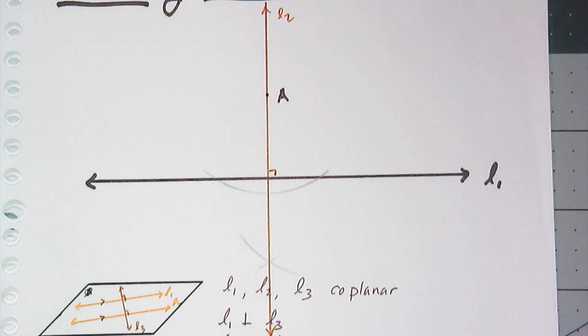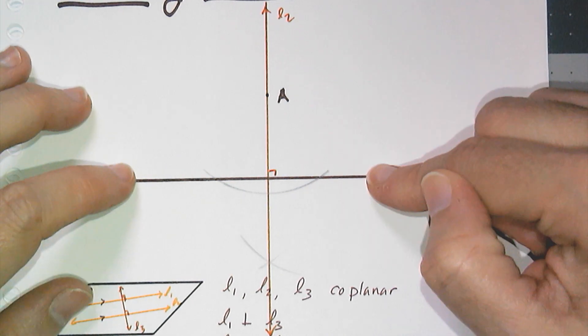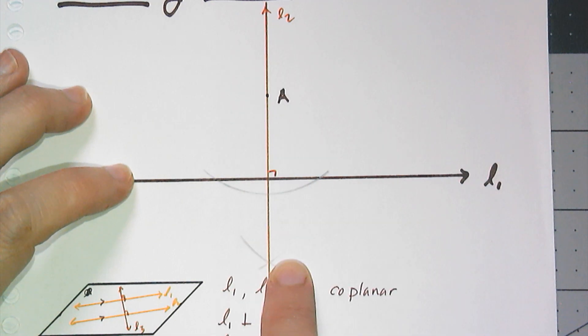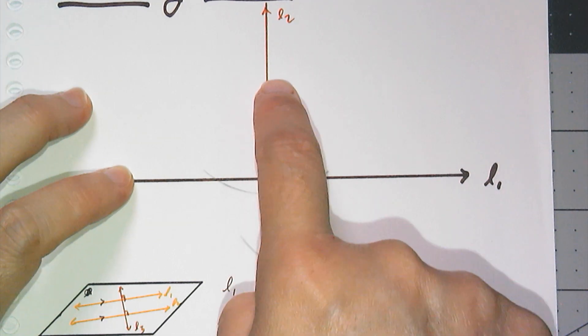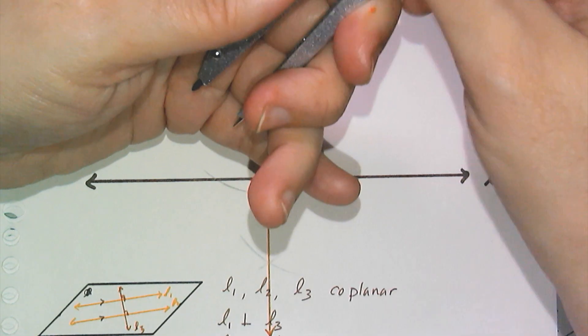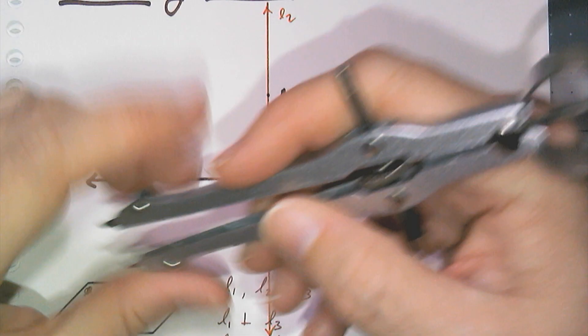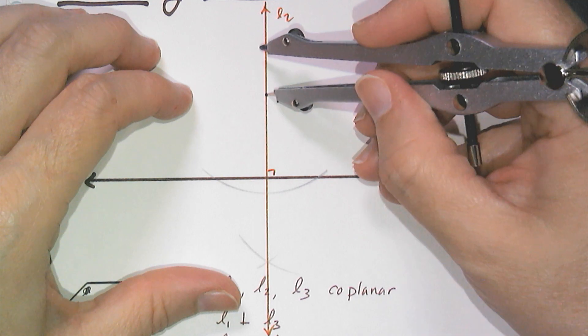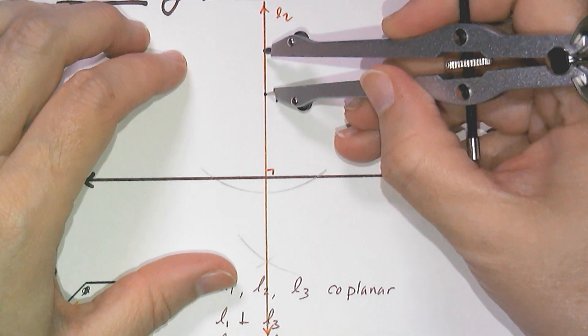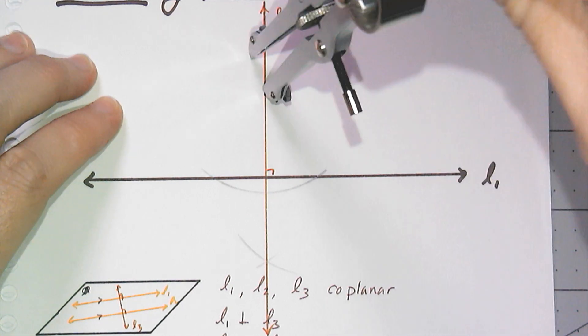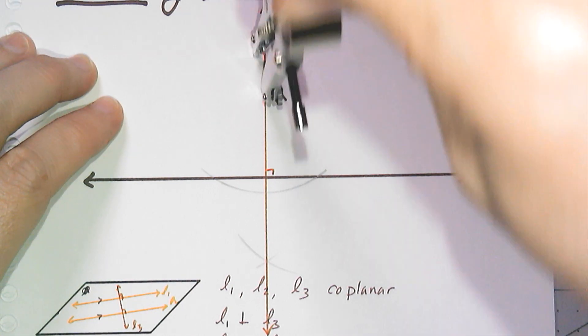So now what I need is, I need to construct a line that is perpendicular to line two that goes through point A. And one way to do that construction is to put your compass point on A, and then you're going to find two endpoints of a line segment where A is,